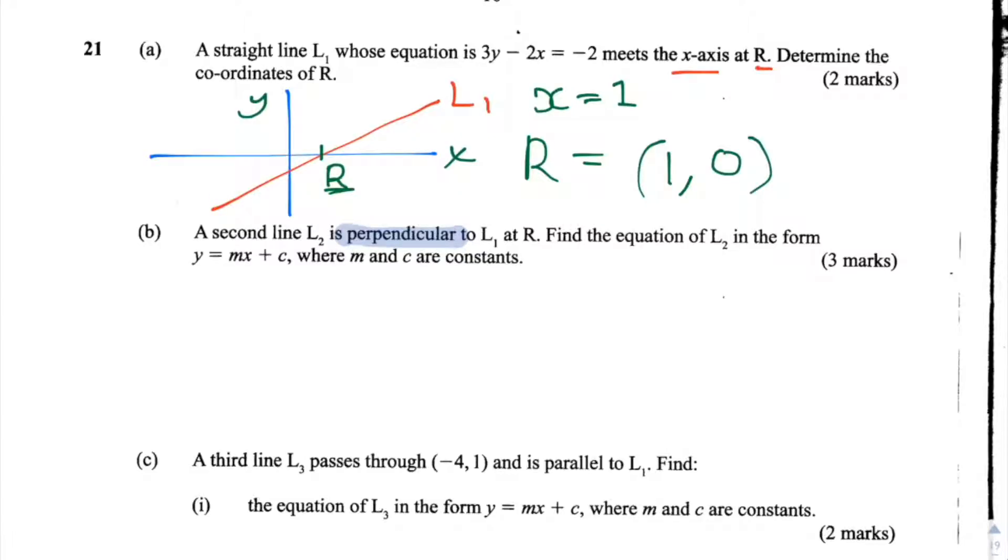We're told the second line L2 is perpendicular to L1 at R. So if the line L2 is perpendicular to L1 at R, that means that the gradient of line L2, let's call that m2, multiplied by the gradient of line L1, let's call that m1, is equal to minus 1.